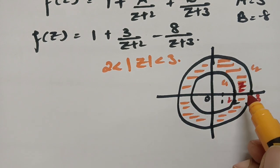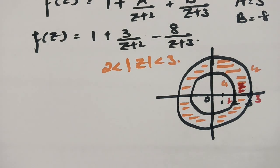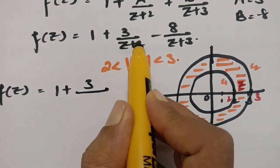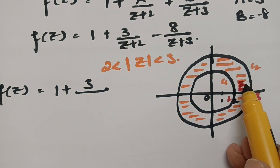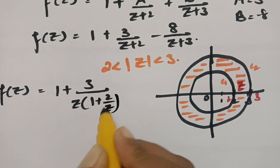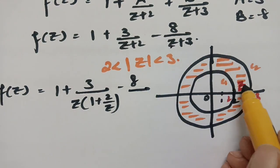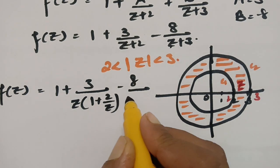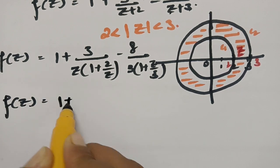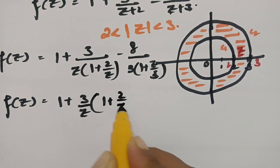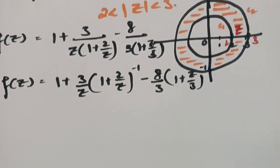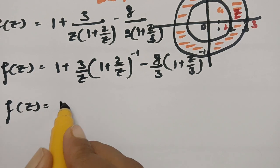According to our Laurent series, since z lies within the ring-shaped region, f(z) = 1 + 3/(z + 2) - 8/(z + 3). Comparing z and 2, since z is bigger, we take z common from the term with (z + 2), giving (1/z)(1 + 2/z)⁻¹. Comparing z and 3, since 3 is bigger, we take 3 common from (z + 3), giving (1/3)(1 + z/3)⁻¹. So f(z) = 1 + (3/z)(1 + 2/z)⁻¹ - (8/3)(1 + z/3)⁻¹.